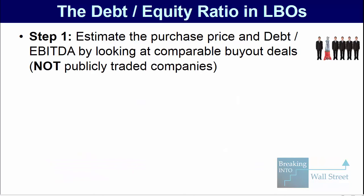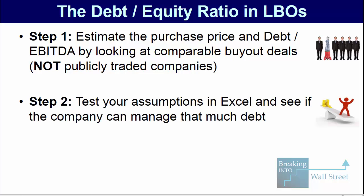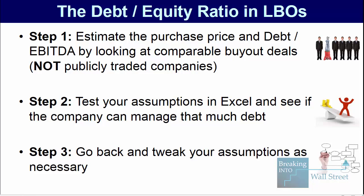Let's do a recap and summary. To figure out the amount of debt to use in an LBO, you need to figure out the purchase multiple and how much you're paying for the company first, then the amount of debt will come from that. Estimate the purchase price and debt-to-EBITDA by looking at comparable leveraged buyout deals — not public companies, which usually have a lot less debt. Once you have rough estimates from two to three good comparable companies, go into Excel, test your assumptions, and see if the leverage ratio declines and the coverage ratio increases over time. Then go back and tweak your assumptions as necessary. You still have to build a full buyout model and come up with your recommendation, but by following these steps, you should be moving in the right direction and able to finish these types of case studies more easily and effectively.